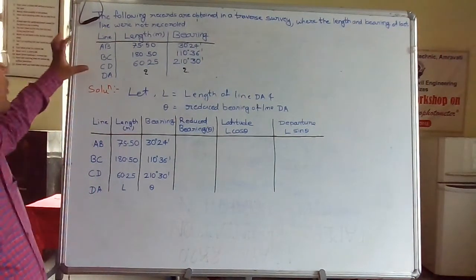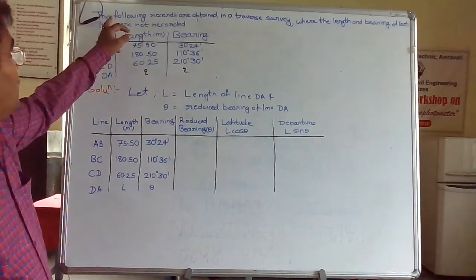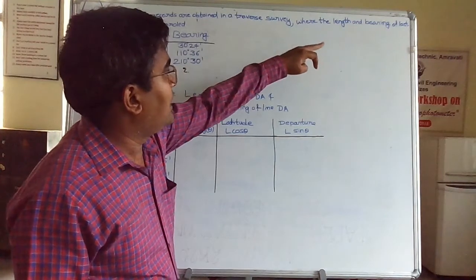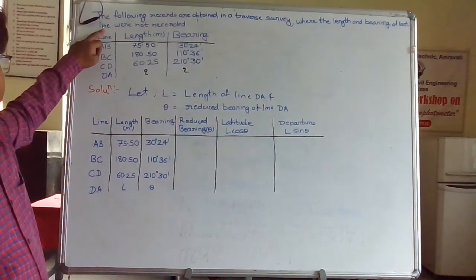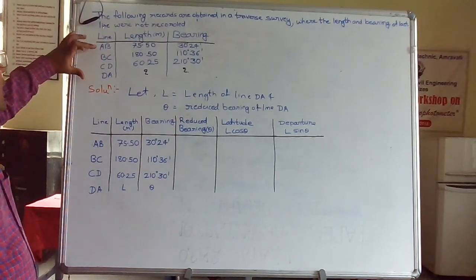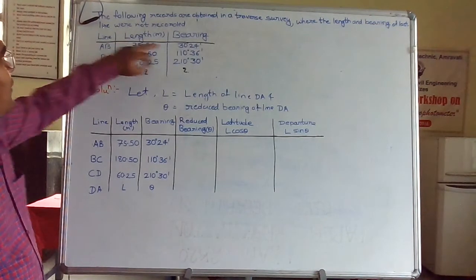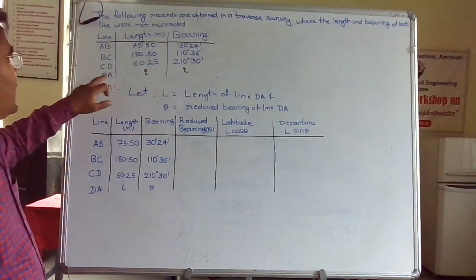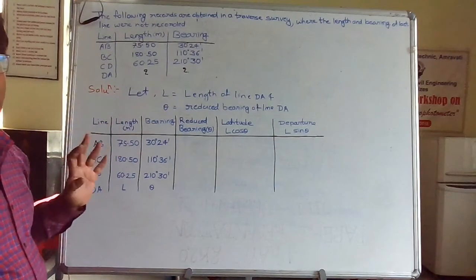Today we are going to discuss one problem about the missing entry. The following records are obtained in a traverse survey where the length and bearing of the last line were not recorded. The lines are AB, BC, CD, and DA — meaning it is a closed traverse. The length and bearing of lines AB, BC, and CD are given, and the length and bearing of the last line DA is missing. We have to find it out.